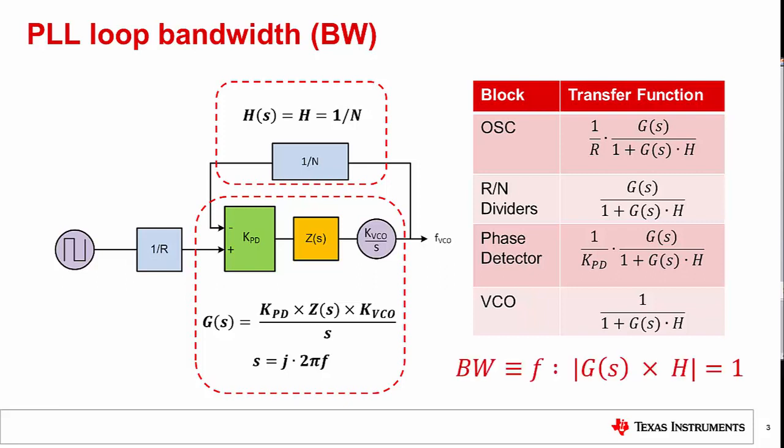Loop bandwidth, BW, is the most critical loop filter parameter affecting the transient response and is defined as a frequency that makes the magnitude of G times H equal to 1.